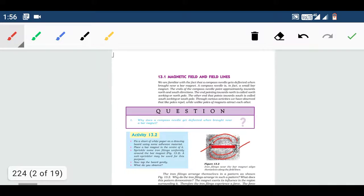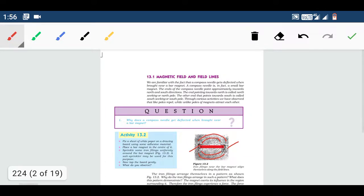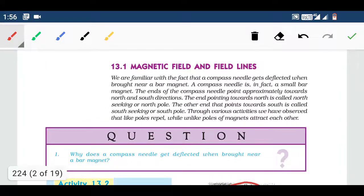Next, this is the next one. Magnetic field and field lines. What is magnetic field? Suppose this is a magnet. This is a magnet.